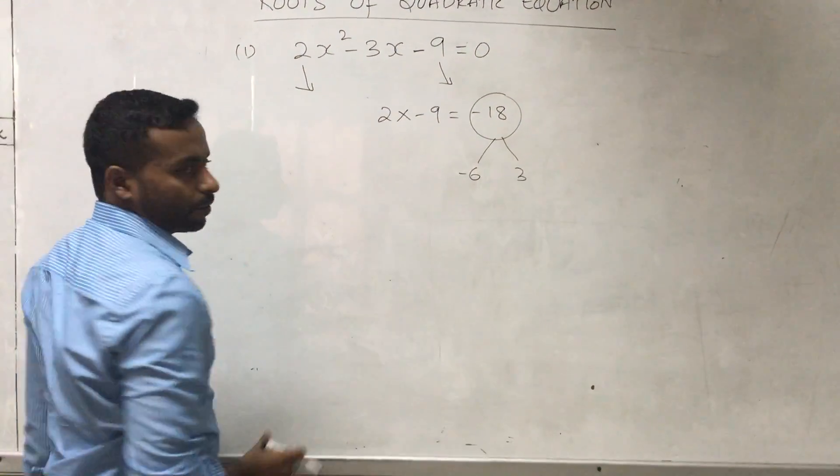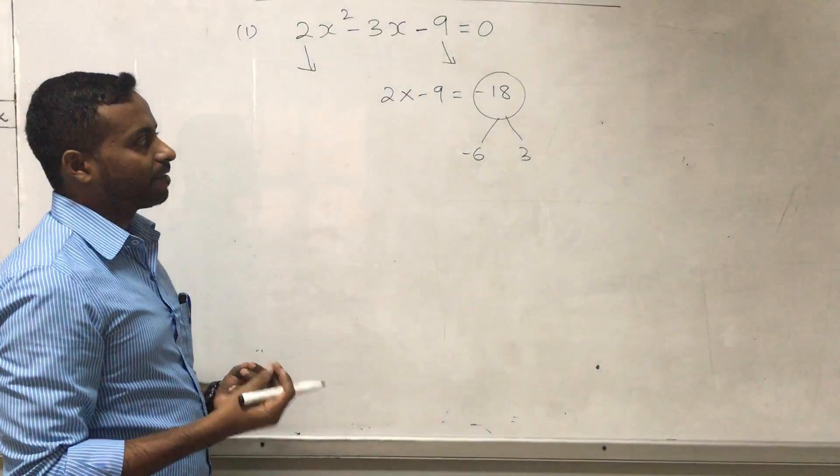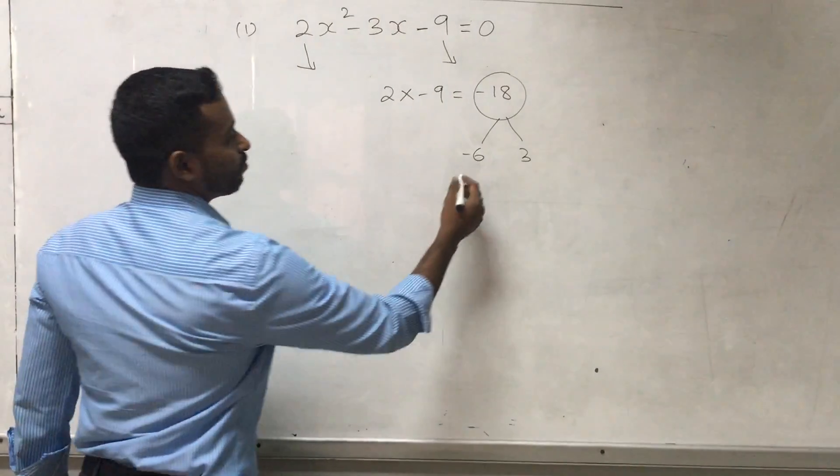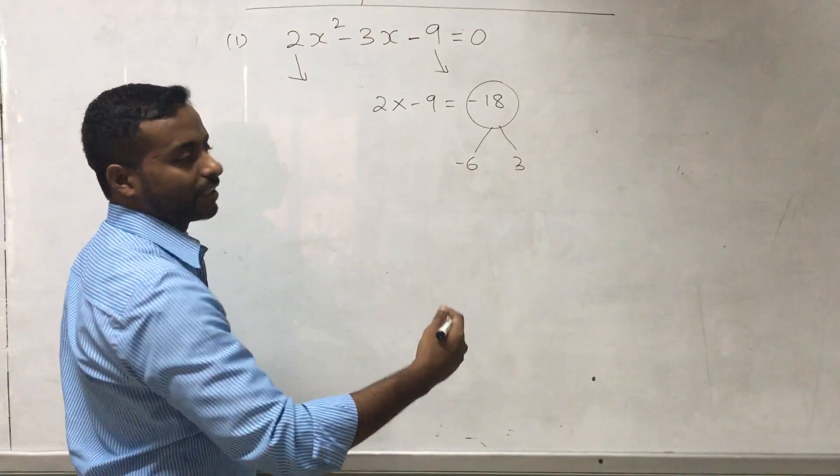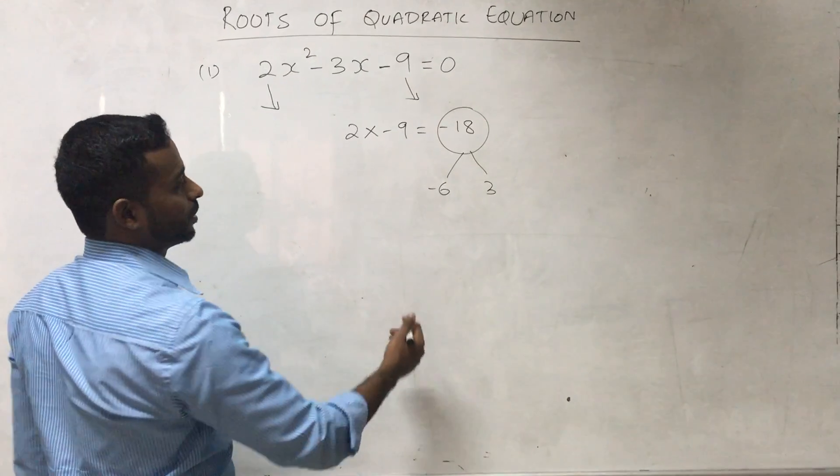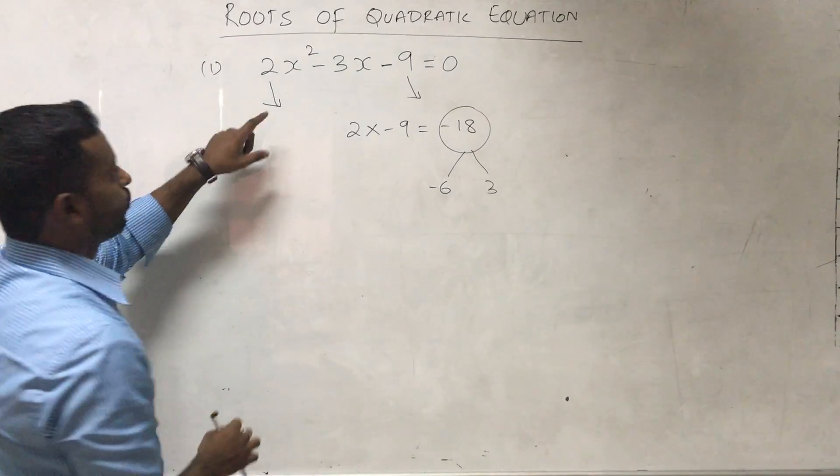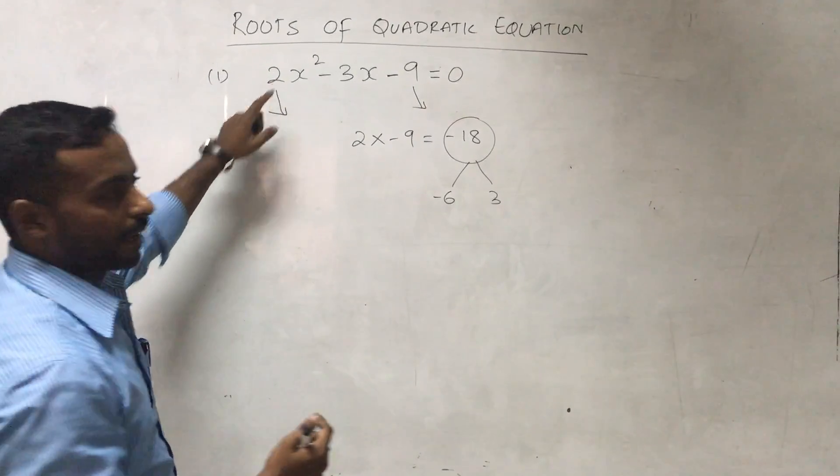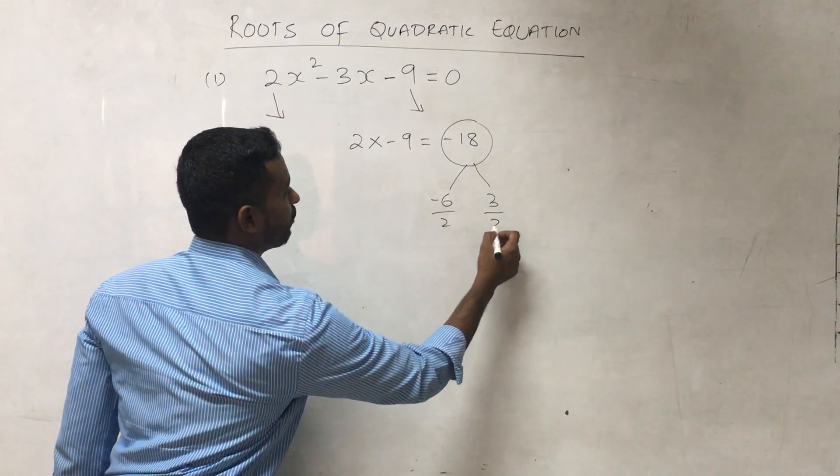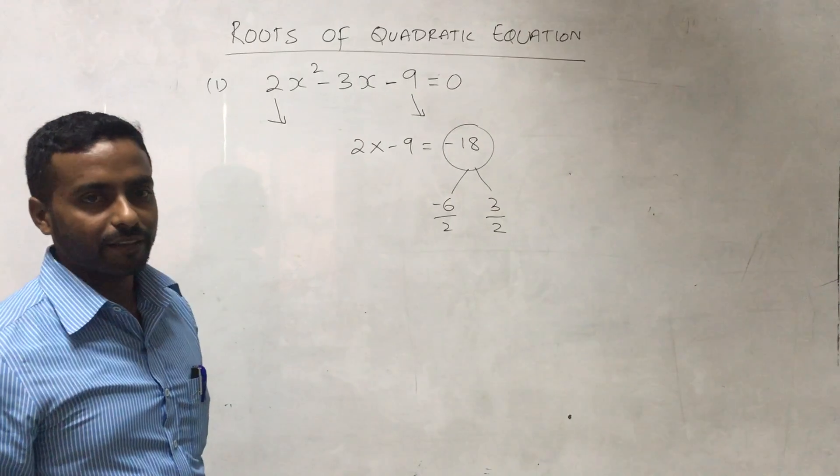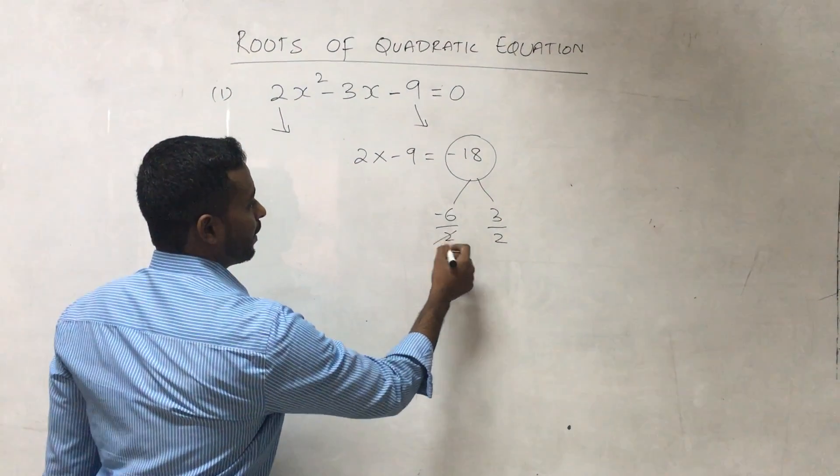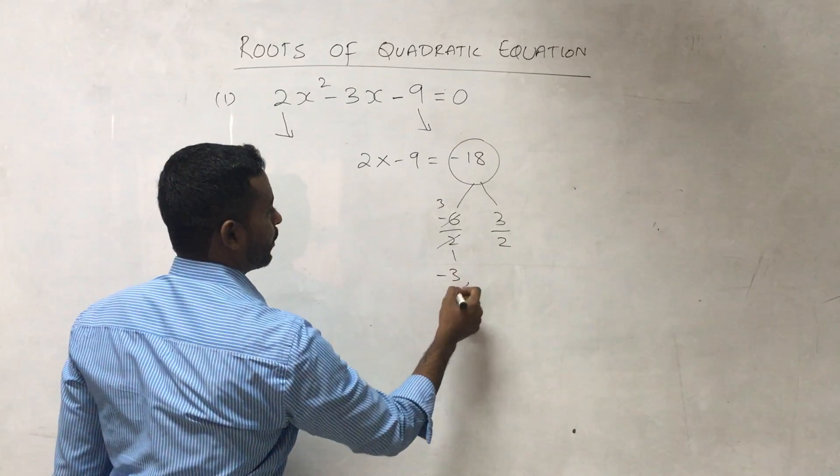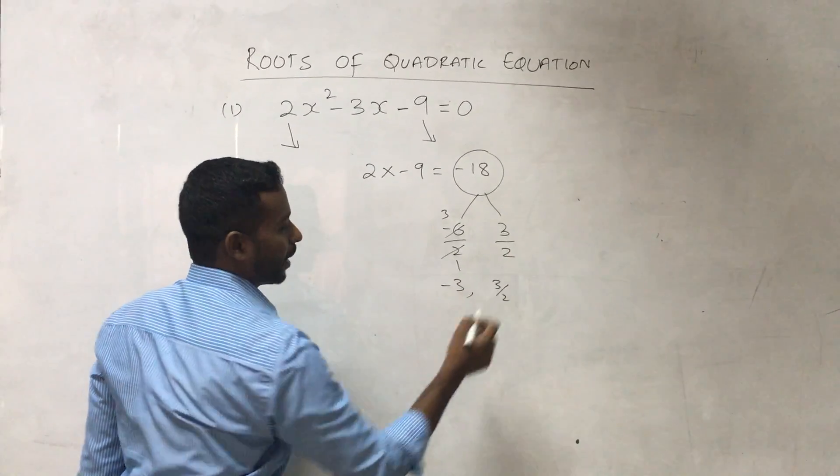These two values, the factors of 18, will become our roots in later stages. With these two factors, the simple way is to take the coefficient of x² and divide with these two factors. Now simplify it, and I'm getting -3 and 3/2.